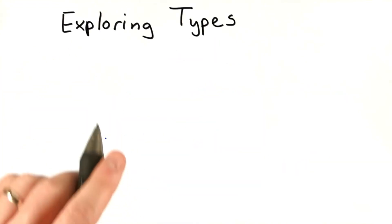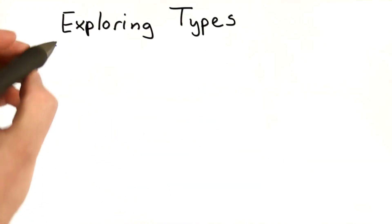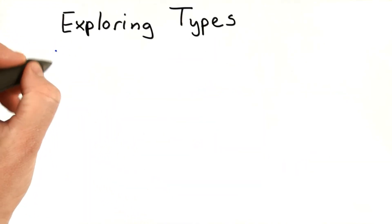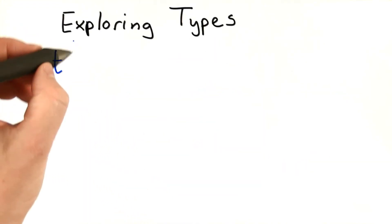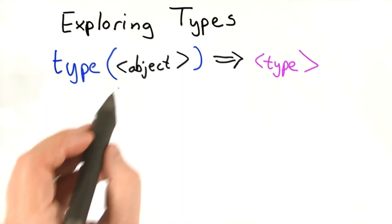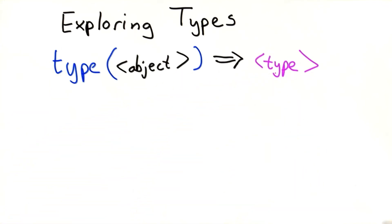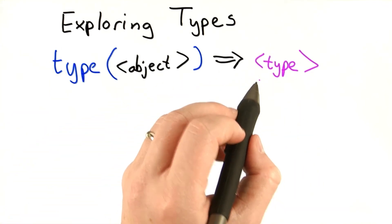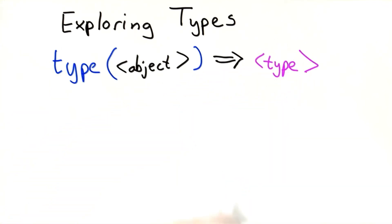There's an easy way to explore types in Python, and that's to use the built-in type operator. The type operator takes any object as its input, and produces as its output the type of the input object.